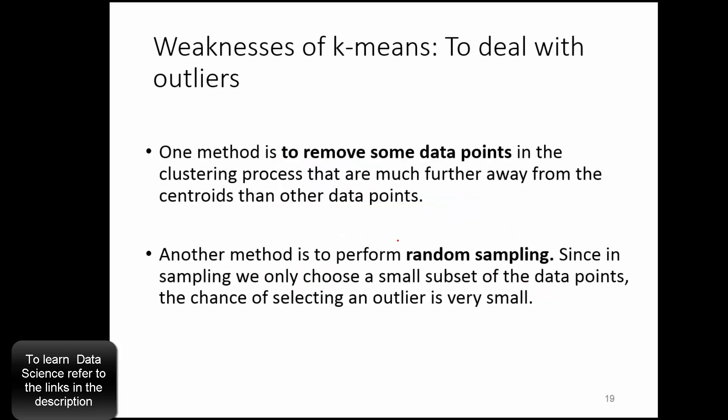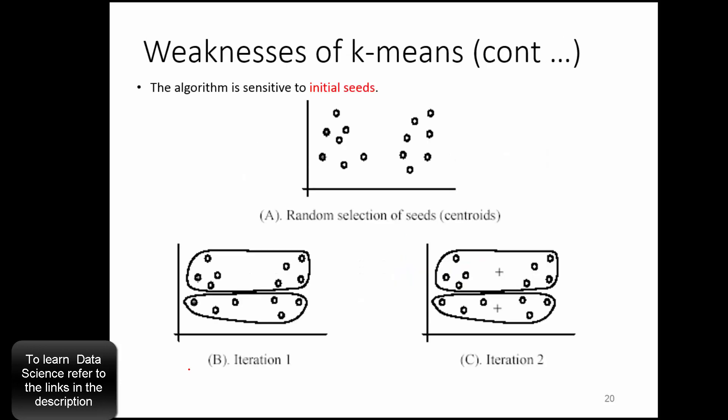The second way is to take a random sampling. When you take a random sample, then you will likely not include many outliers in your sample. So that's the second way of handling outliers.